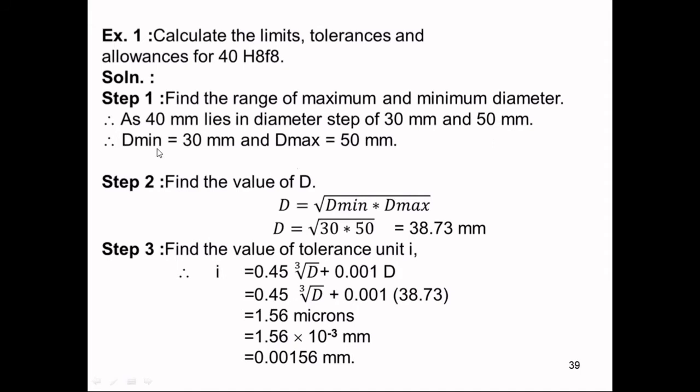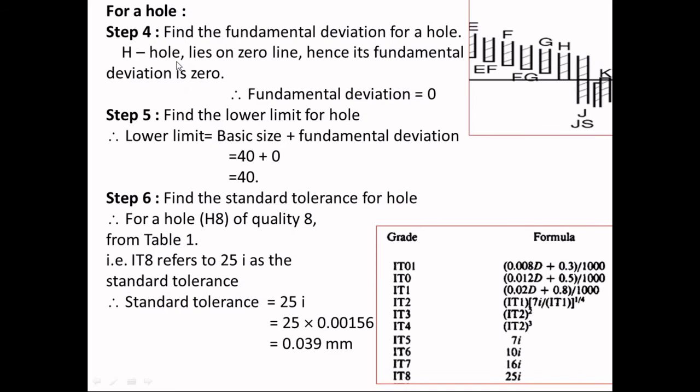D_min will be 30 mm and D_max will be 50 mm. We can immediately get D, which equals the square root of 30 × 50, giving 38.373 mm. With that, the tolerance unit i can be calculated using the formula, giving 1.56 microns, which we convert to millimeters as 0.00156 mm.